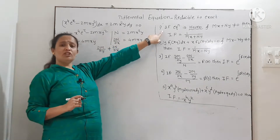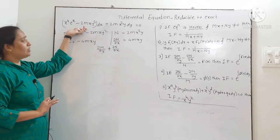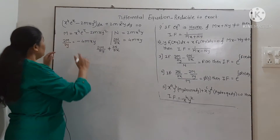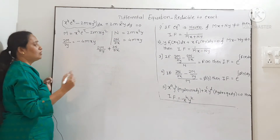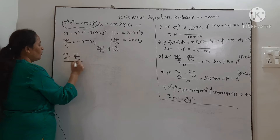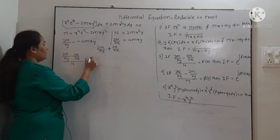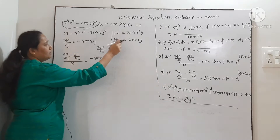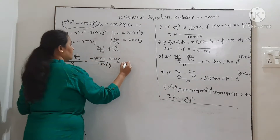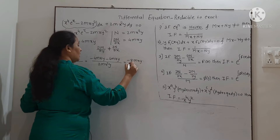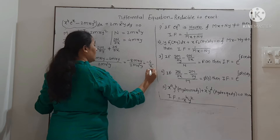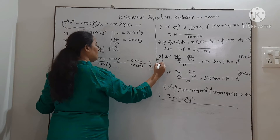Can we apply the first rule — is the equation homogeneous? No, it is not homogeneous, so the first rule is not applicable. Can we apply the second rule? We cannot take y common from M, so the second rule is also not applicable. Checking the third rule: (∂M/∂y − ∂N/∂x) / N = (−4mxy − 4mxy) / (2mx²y) = −8mxy / (2mx²y). After cancellation, this equals −4/x, which is a function of x only.